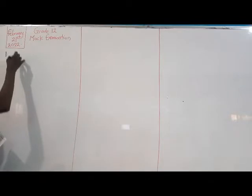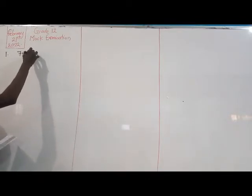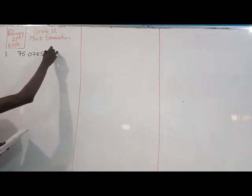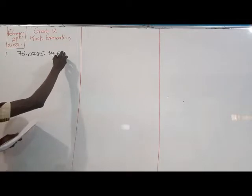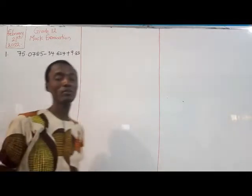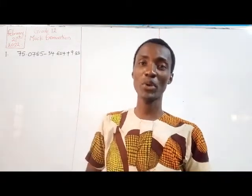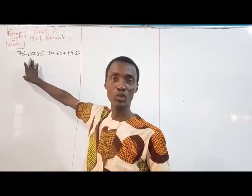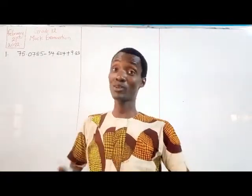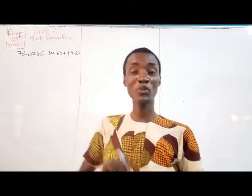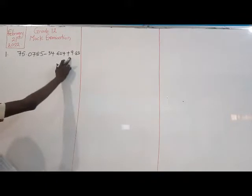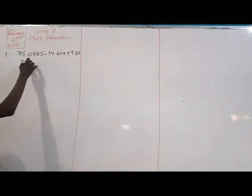This morning we're going to try to solve 50 OBJ questions. I'll be very fast, so check the link supplied later where you'll get the soft copy of the questions so you can follow along with the video. We'll go straight to business. Number one tests your knowledge of decimals: 75.0785 minus 34.624 plus 9.83. For most exams in Nigeria you're allowed a calculator, but I'll go old school.